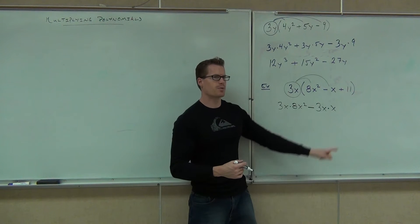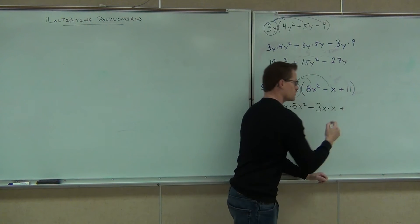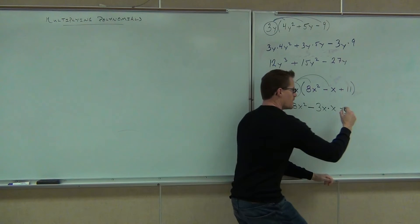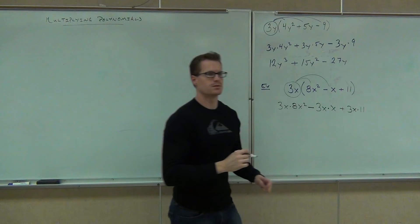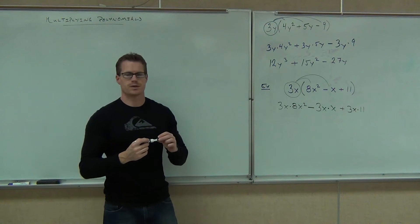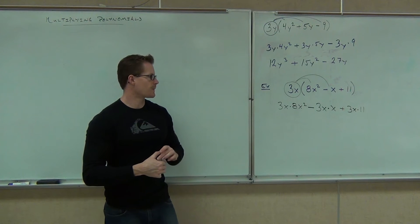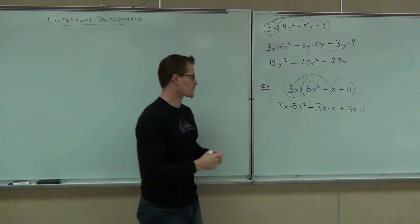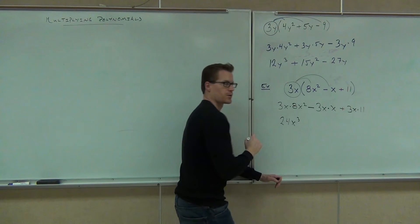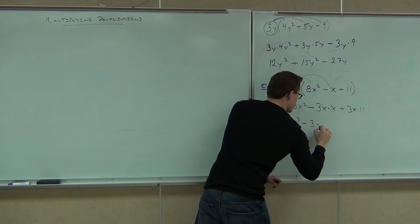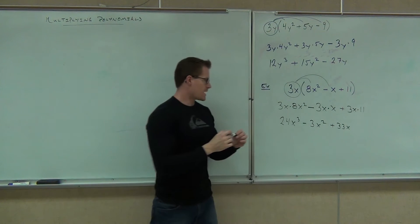And lastly, are we going to have a plus or minus at the end? Plus — we have a positive times a positive. I'm going to write 3x times 11. So we'll get 24x to the third, 3x squared, 33x.